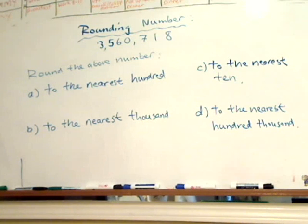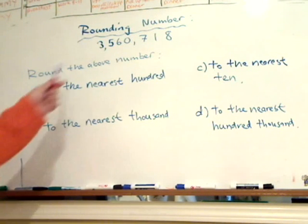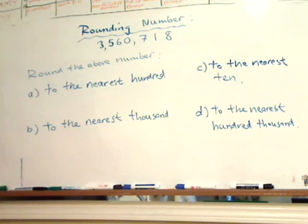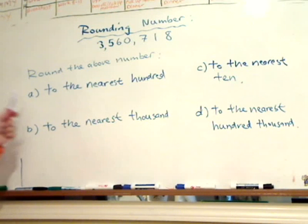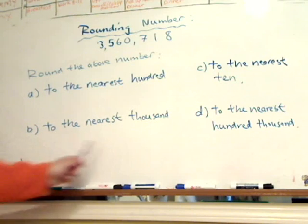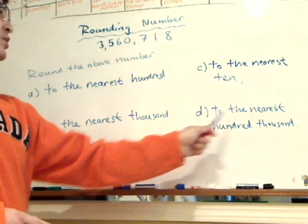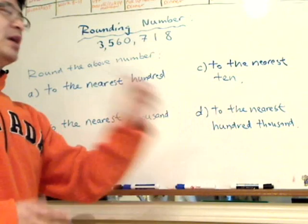The next thing we want to do is learn about rounding numbers. I have a seven-digit number here: 3,560,718. The question is to round this number to the nearest hundred, to the nearest thousand, to the nearest ten, and to the nearest hundred thousand.